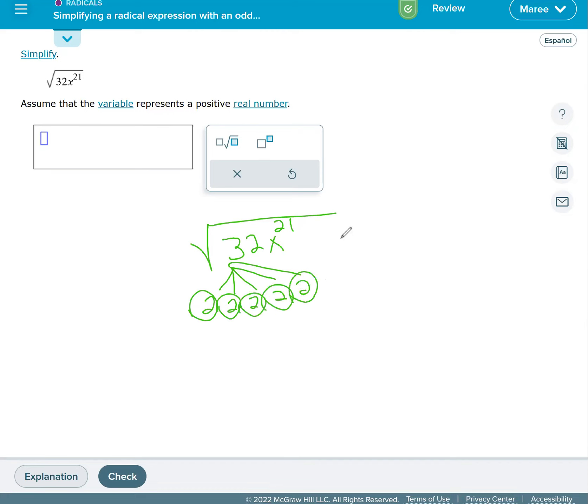You can break it down by doing four times eight. And then two times two is four. Eight is four times two, which is two times two times two. And so I'm going to put five twos.